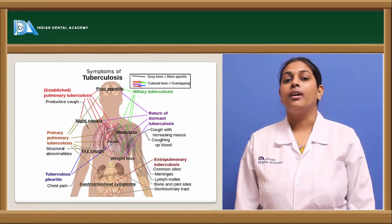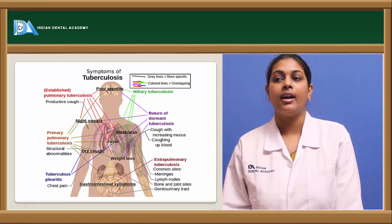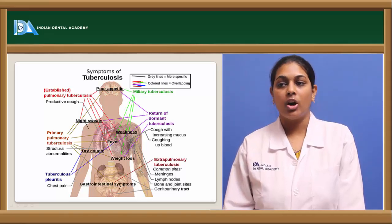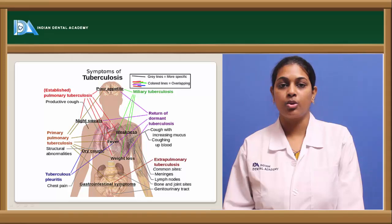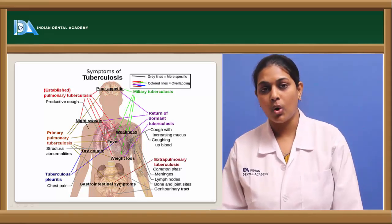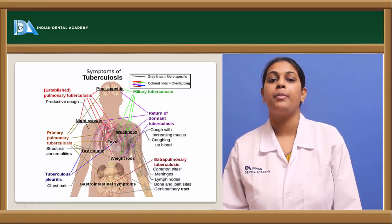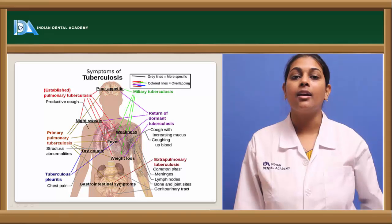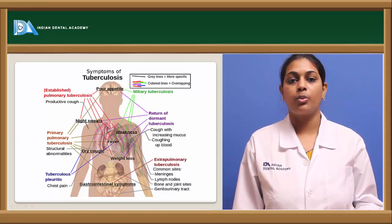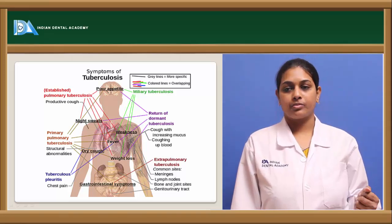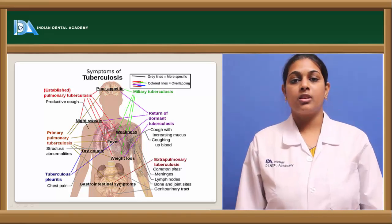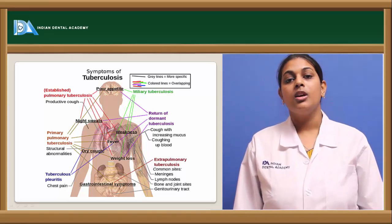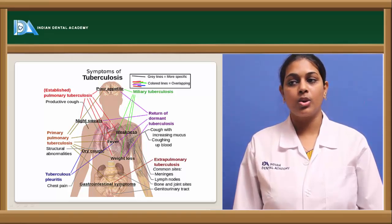Other systemic features include loss of appetite and weakness. Extra-pulmonary symptoms may include gastrointestinal tract involvement. Other extra-pulmonary sites include bone and joints, where tuberculosis granulomas line the sinus tracts. Lymph nodes most commonly involved are the mesenteric lymph nodes for small intestine involvement, and hilar lymph nodes for lung involvement.